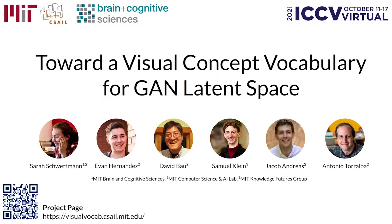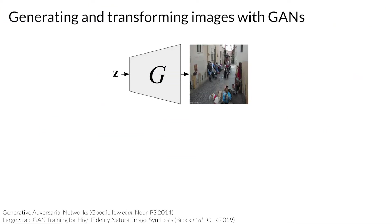Hi, I'm Sarah Schwetman, and I'm presenting our paper Toward a Visual Concept Vocabulary for GAN Latent Space. GANs take as input a latent vector Z and produce an image as output. Now, say I wanted to change something about this scene, like make it more festive.